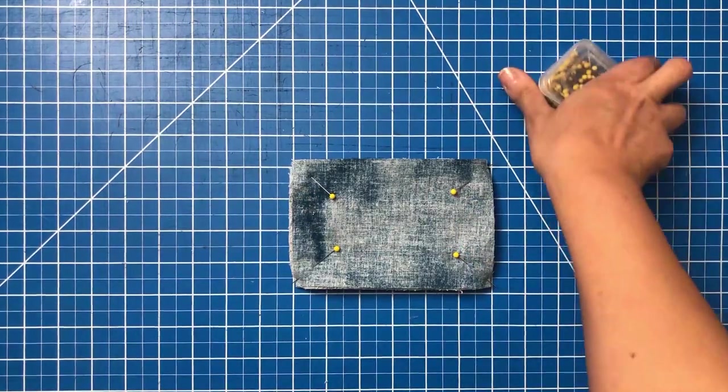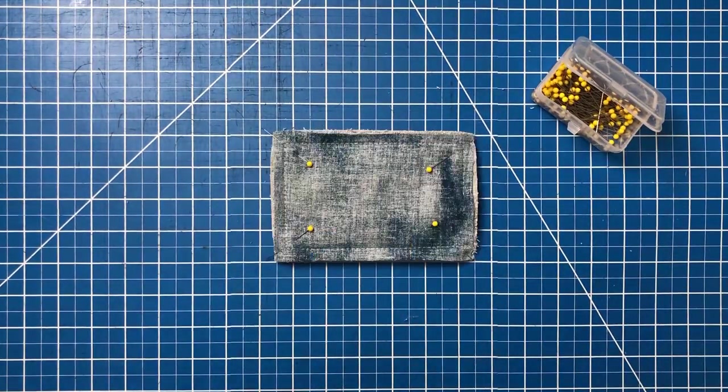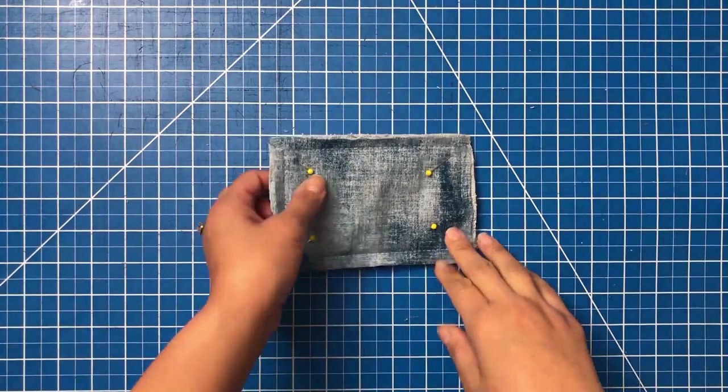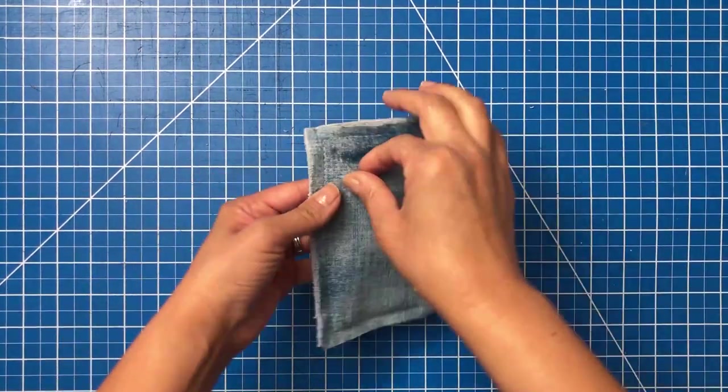Okay, so now, with a half inch seam allowance, we're going to sew all around the outer edge, leaving a gap so that we can turn it right side out.